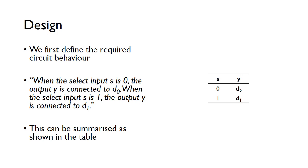We can summarize that as shown in the truth table. When s is 0, the output y equals d0. When the select bit is 1, the output y equals d1.